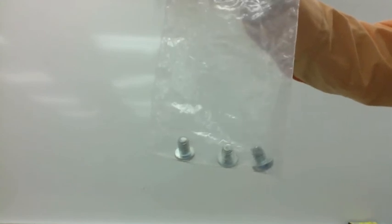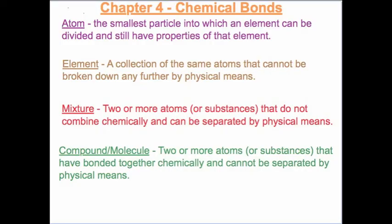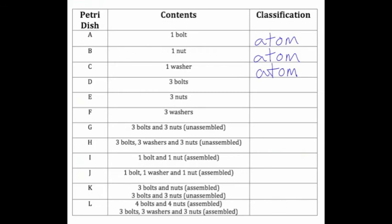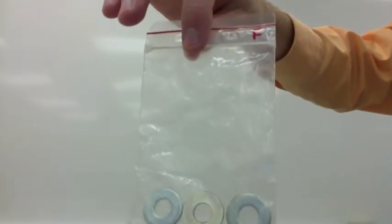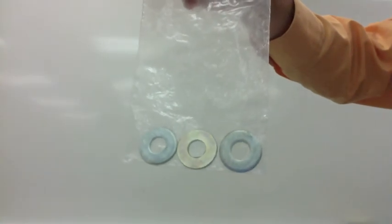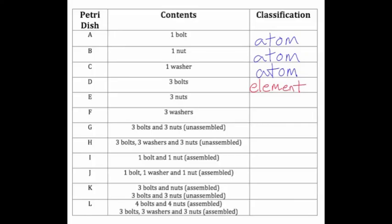Bag D has three bolts in the same bag. This best represents an element — a collection of atoms. So under D on our data table, we write element. Bag E has three nuts in the same bag. Bag F has three washers in the same bag. Both E and F are the same atoms in the container, so they're best described as elements.